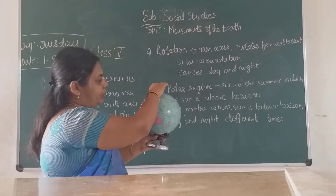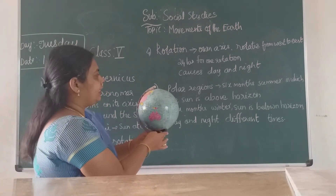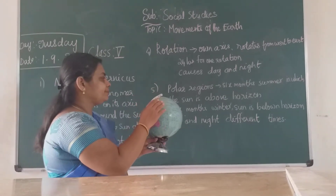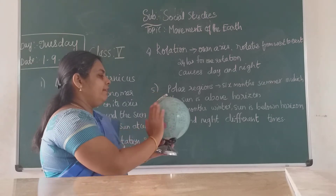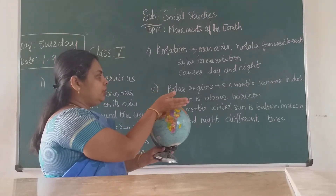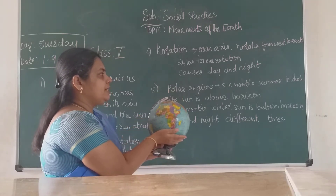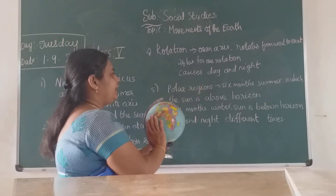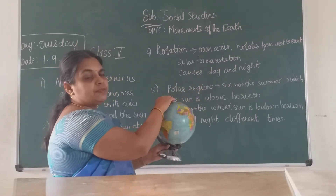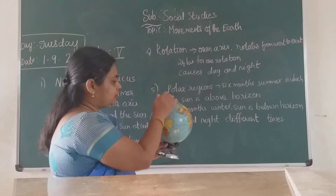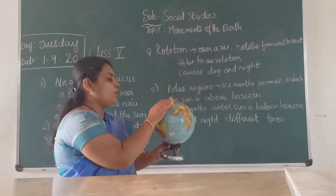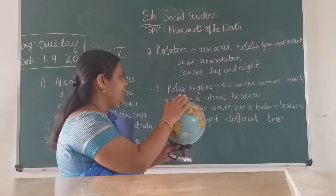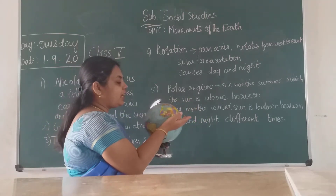The polar regions — Arctic in the north and Antarctica in the south — receive less sunlight as the earth rotates. In the northern hemisphere, for 6 months the sun is above the horizon, giving you summer, while the other side experiences less sunlight.